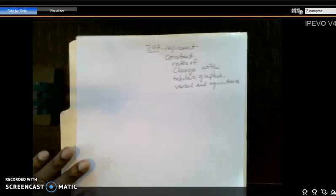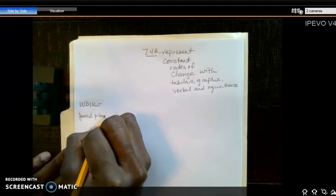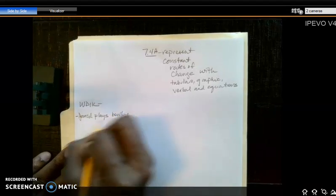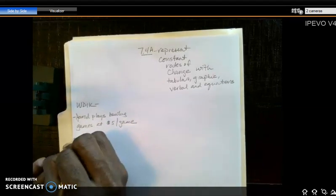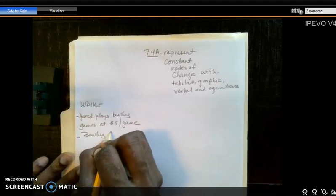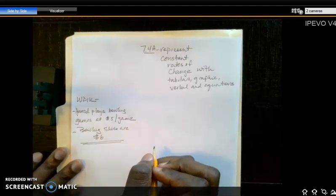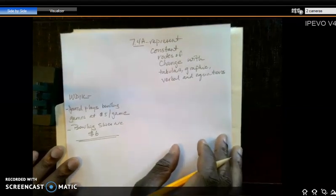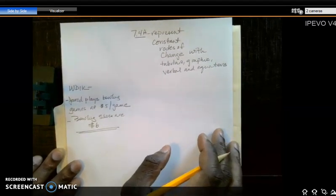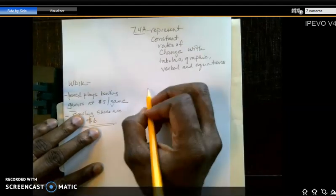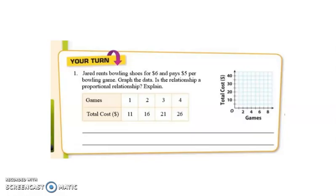All right, so what I want to start by doing is writing down some things that we know. So, the things that I know so far is that Jared plays bowling games at $5 per game. We said that bowling shoes are $6. So, those are the things that we know that are given to us in this particular problem. Now, the question was asking, is this relationship going to be proportional? And we're going to look at constant rates of change and how we can convert that into algebraic notation as well. So, I want to go ahead and do myself a version of the graph as well. And let's go ahead and remind ourselves what that empty graph looked like.